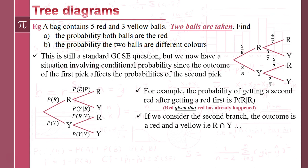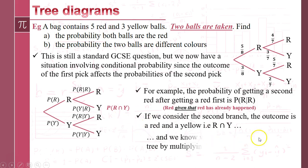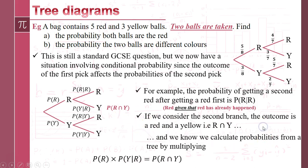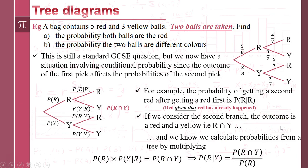If we look at the branch for R₁ and Y₂ — we want red and yellow — we know we multiply along the branches. So that gives us P(R₁) × P(Y|R), which equals P(R₁ ∩ Y₂). And with a simple rearrangement, there again is our conditional probability formula presented formally.